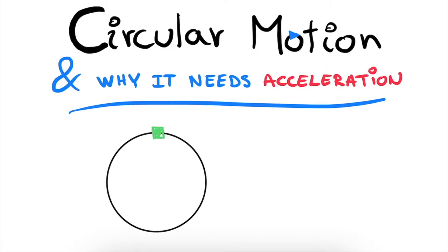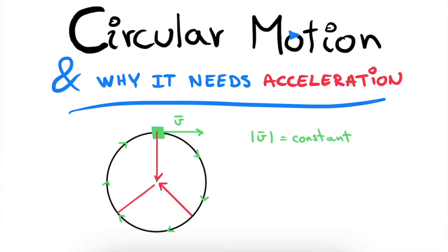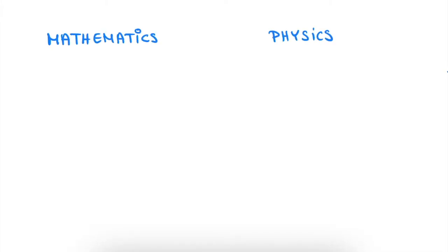Uniform circular motion is often a very confusing topic for students, specifically the acceleration and centripetal force that come with it. Is there an intuitive explanation of why an object traveling at a constant speed in circular motion requires an acceleration pointing towards the center of the circle? It turns out there is, which is what I will guide you through in this video. In essence, it comes down to whether an object can have a non-zero acceleration while still maintaining a constant speed. The answer, surprisingly, is yes. Let's begin at the start and slowly build our way up in five steps, discussing both the mathematics and physics sides at each step.